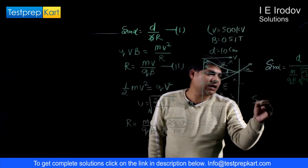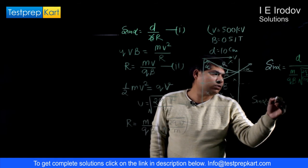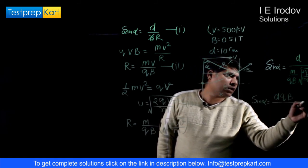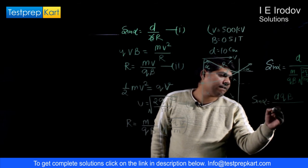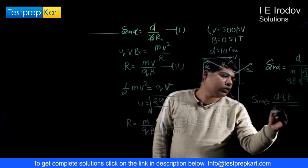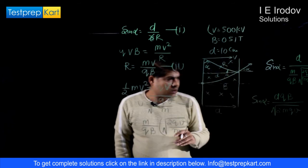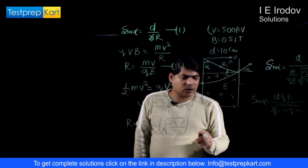We can further manipulate this equation and we can say that sin alpha is equal to D times Q times B divided by square root of 2MQ times V. Now all these values are known.